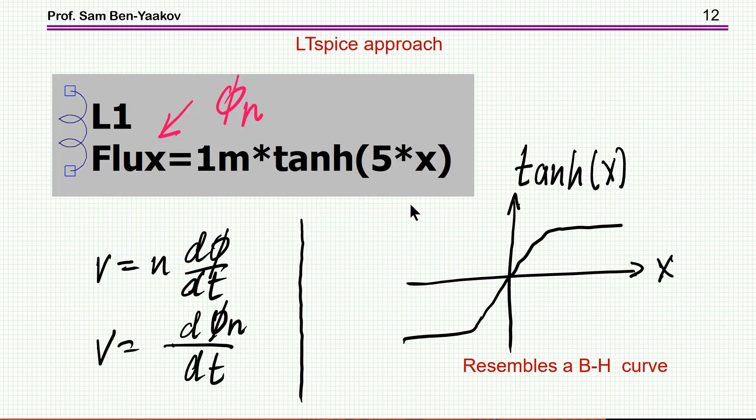Now, going back to LTSpice, what they did here is the following. They are using flux. And we know, due to Faraday law, that V is equal to n, number of turns, d phi dt, and this is the flux. Now, I can absorb this into here, call this a total flux, so not to deal with the numbers. So the voltage is a function of the derivative of this term.